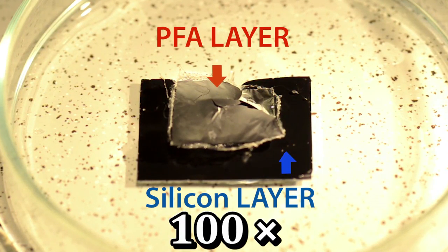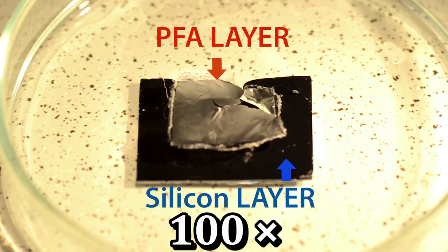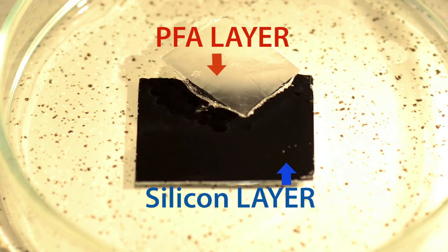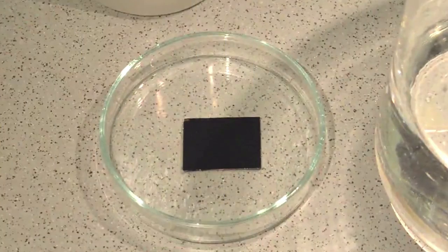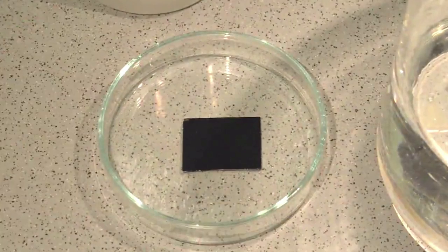This allows the top PFA layer to peel off like molted skin and float away, exposing the silicon nanograss film. Rinsing the new surface with alcohol and drying it restores its water repellency.